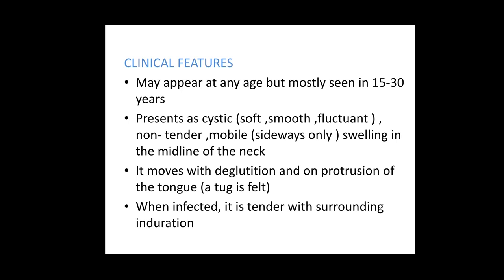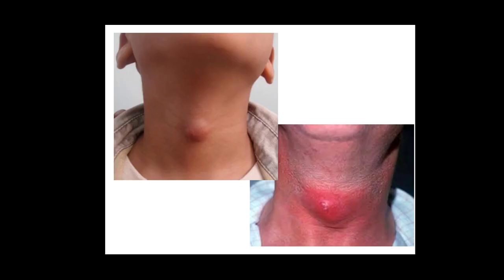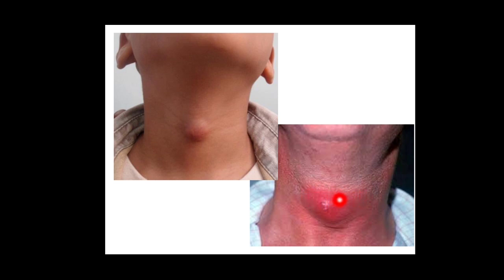When the cyst is infected, it is tender with induration of the surrounding skin. The thyroglossal cyst is seen in the midline location — cystic, soft, fluctuant, smooth surface, moving on deglutition and on protrusion of the tongue. When infected, you can see erythema, local rise in temperature, tenderness, and surrounding edema and induration.